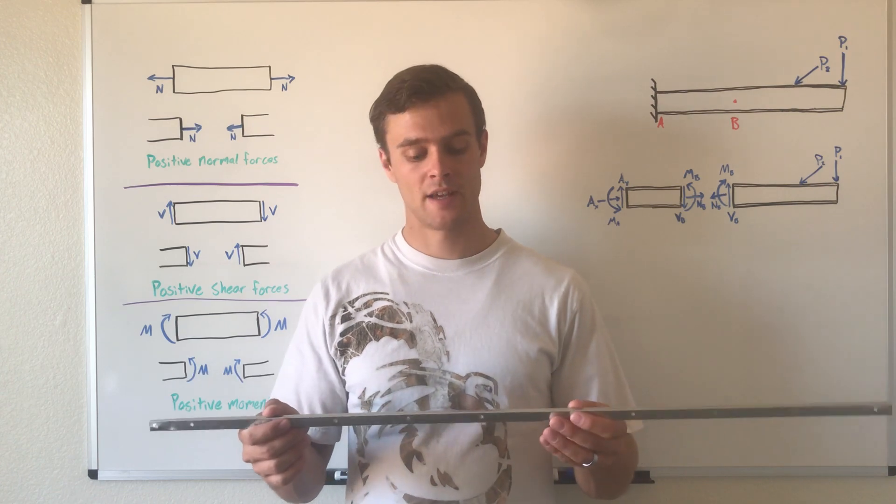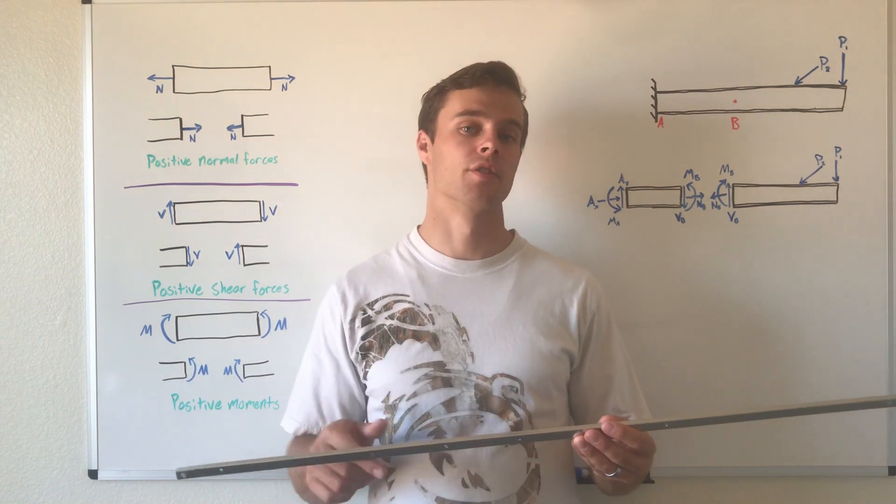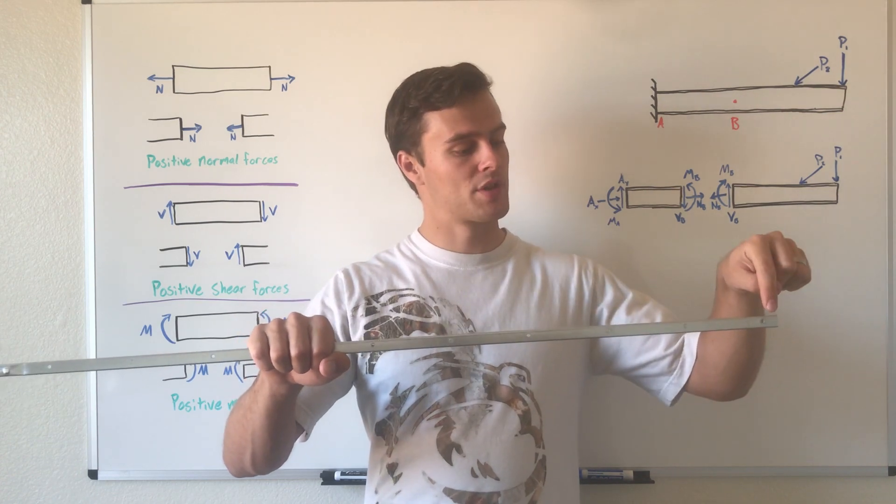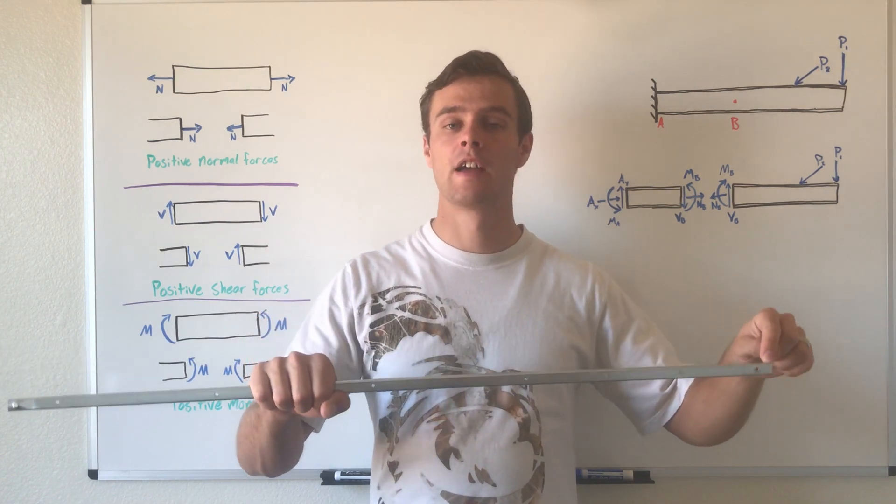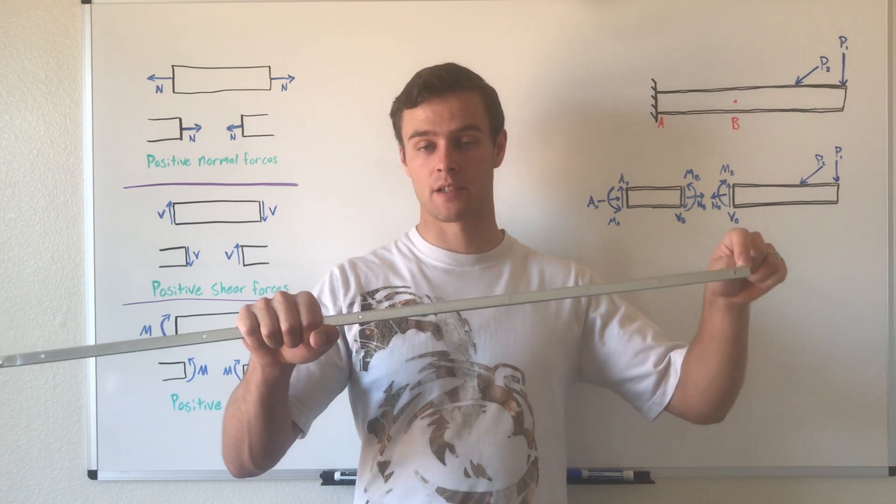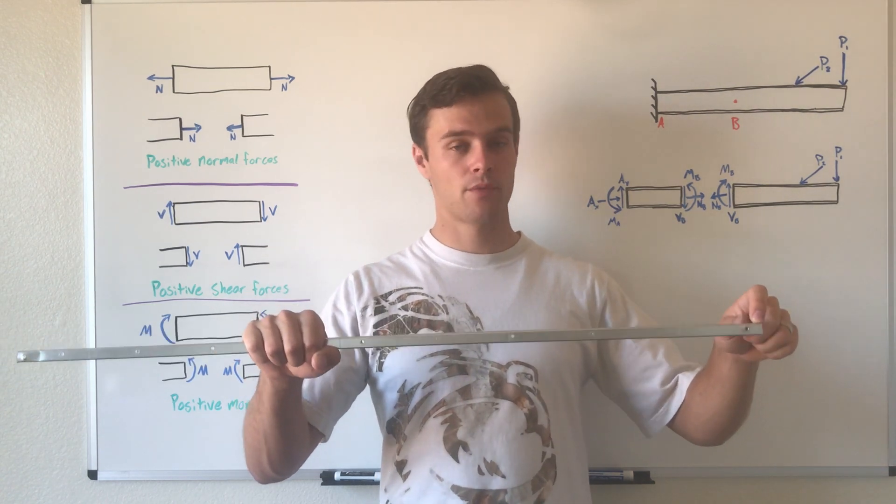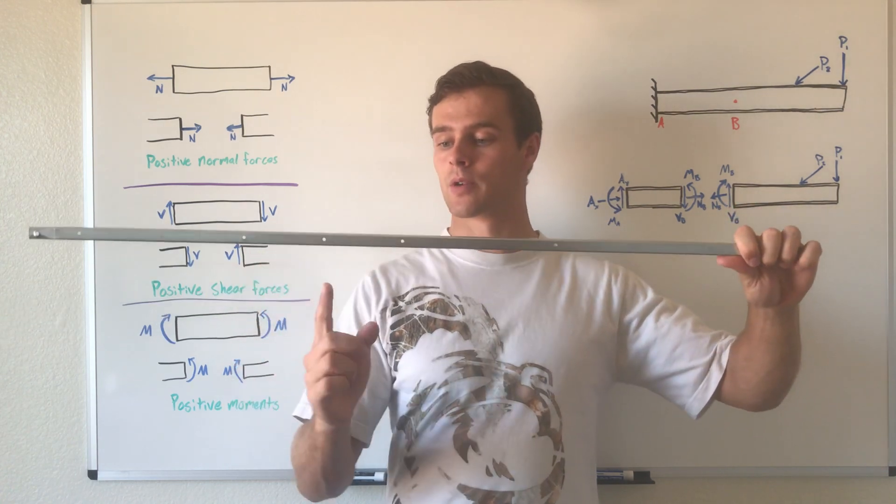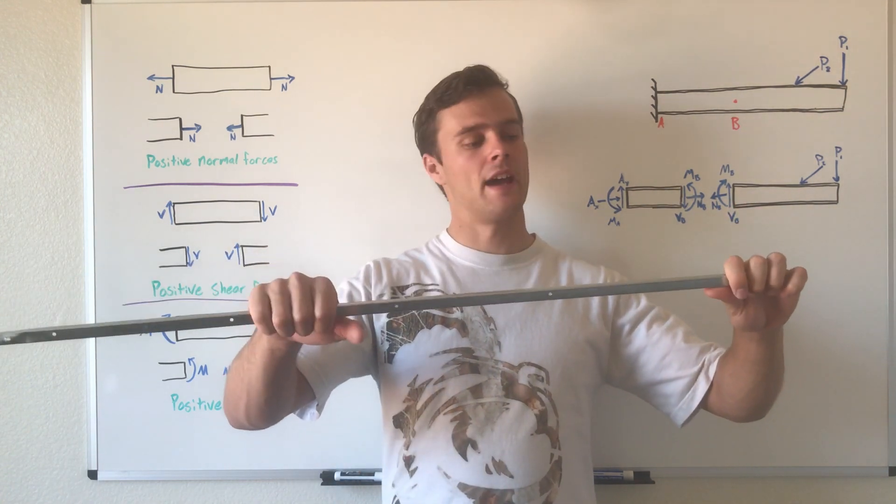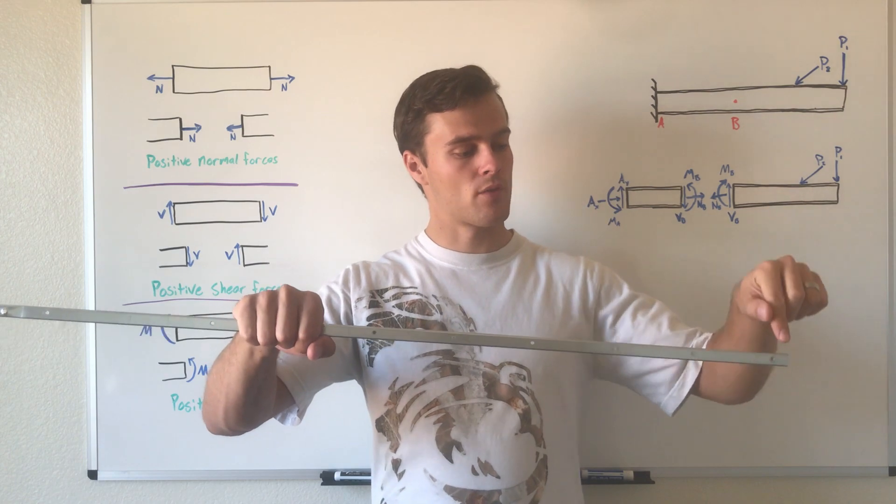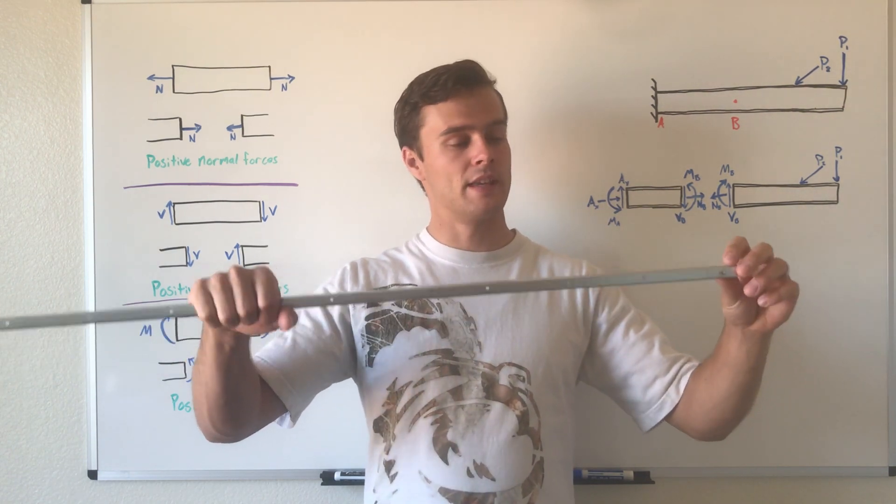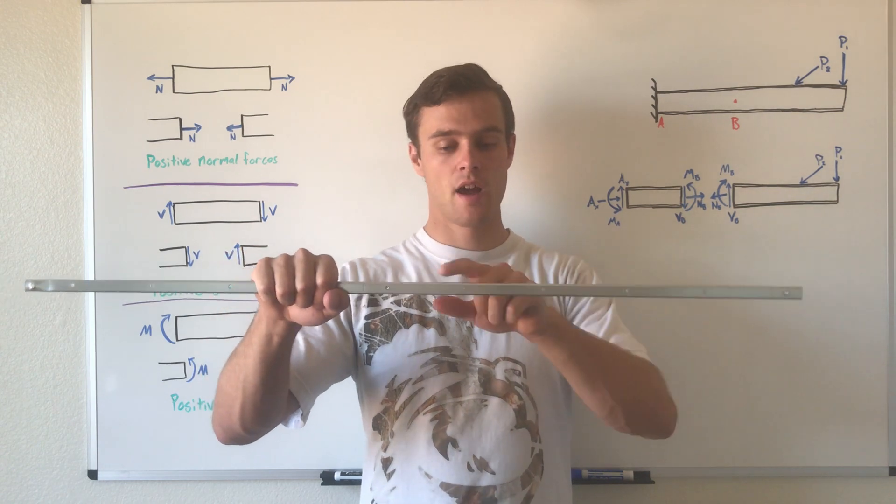A shear force acts perpendicular to the object. If I'm holding this rod and pushing down on this end with my finger, for it to be in equilibrium, the sum of forces must equal zero. If we sum forces in the y direction, we have a force pushing down on this end and a force pushing up on this end. The way that force transfers is through the internal shear forces of this beam.